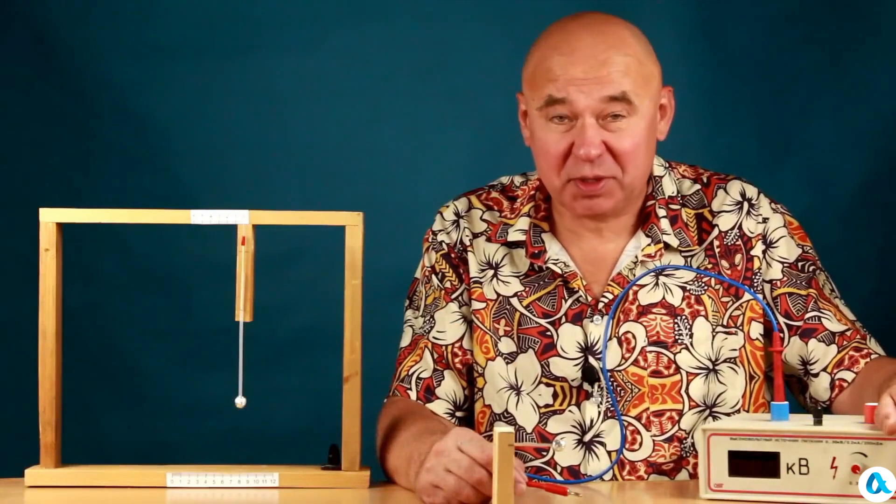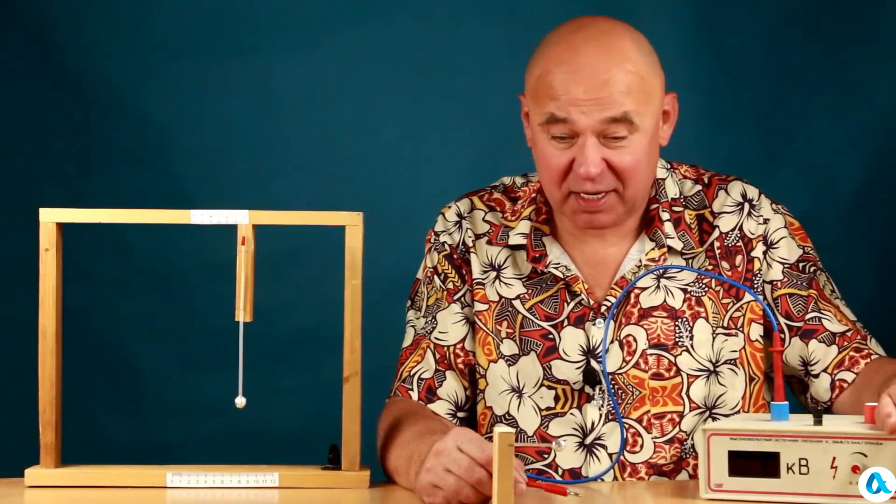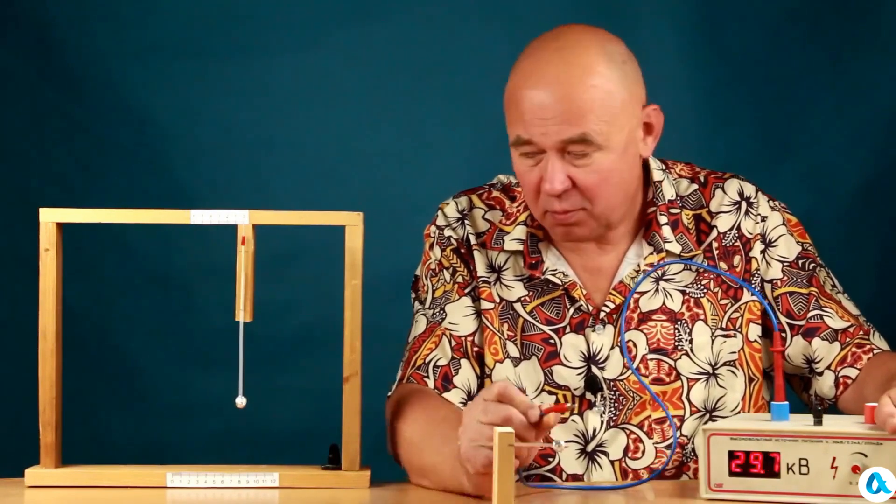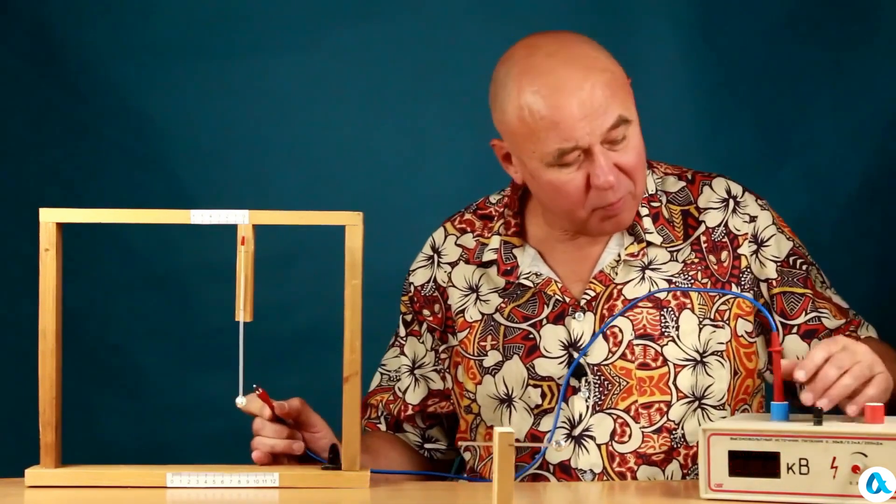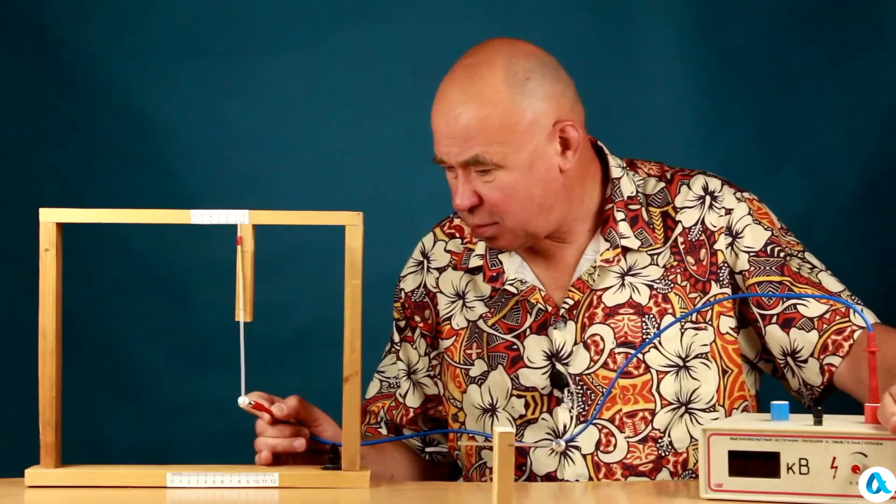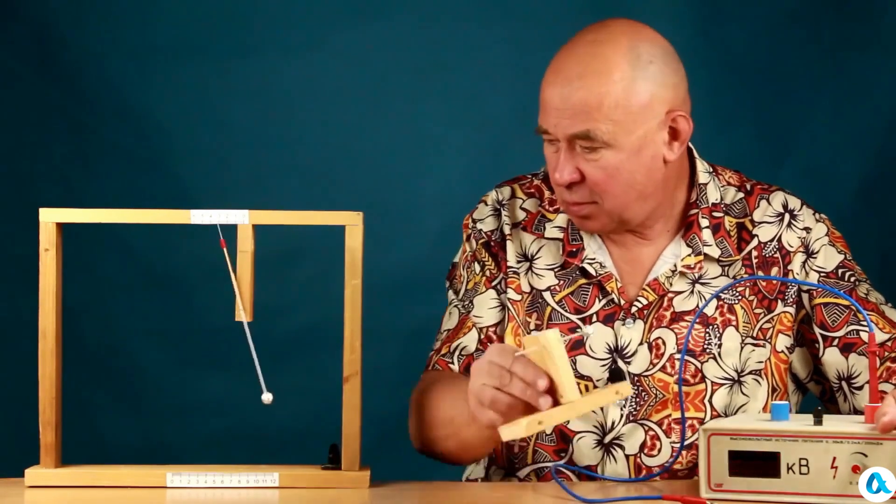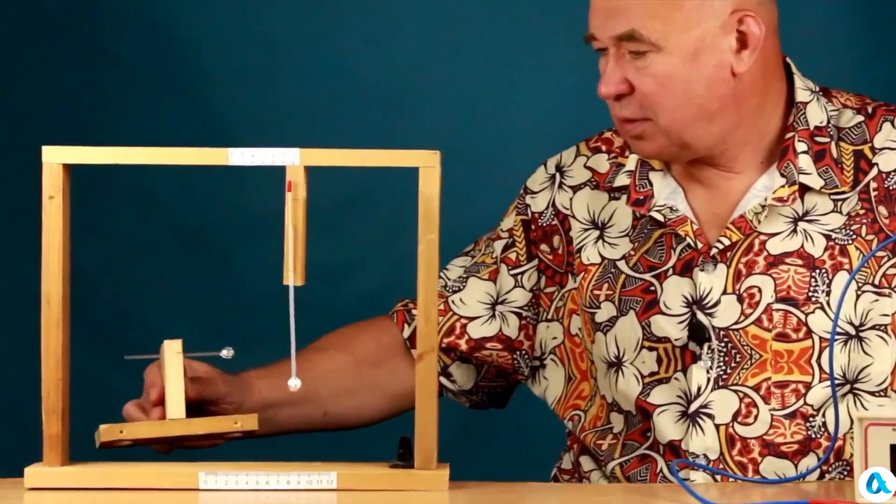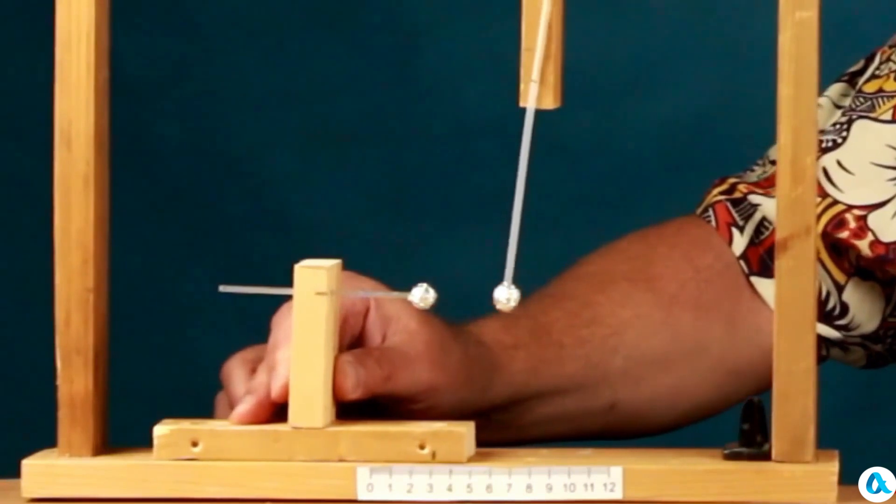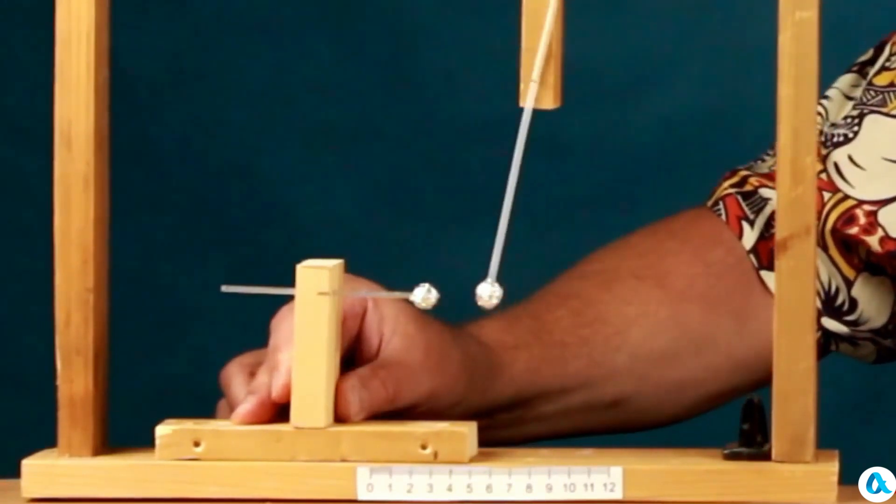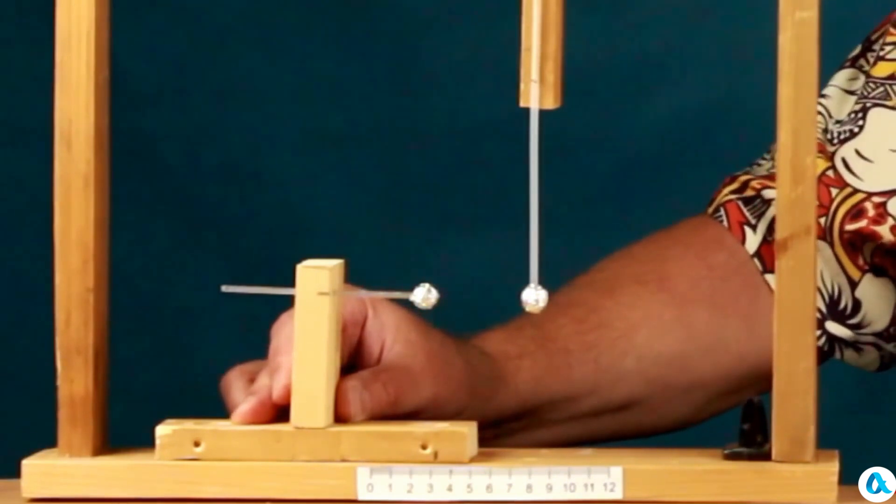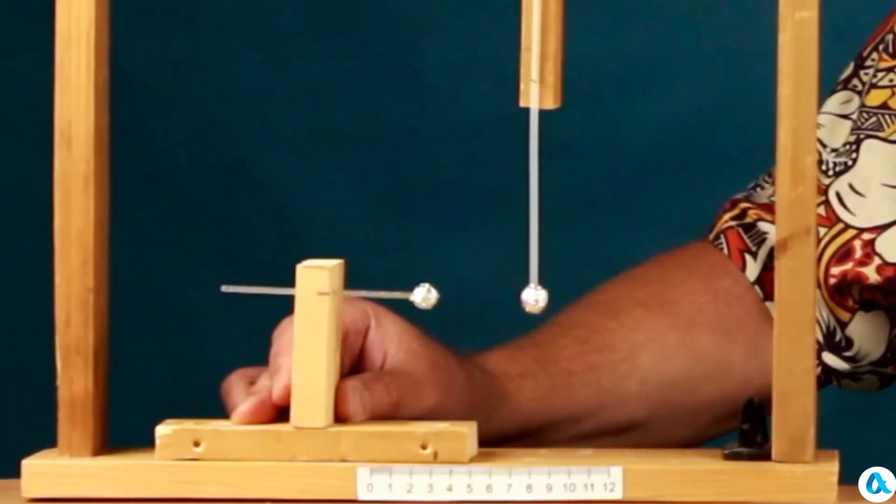I would like to experiment with the attraction of the balls on this same setup but there are some issues. I negatively charge this ball. I rearrange the wire. Now I positively charge this ball. I place the negatively charged ball back, start moving it closer and oops! I barely moved it closer when the balls attracted, a short circuit occurred and the experiment ended.